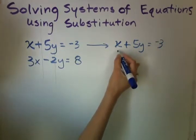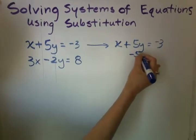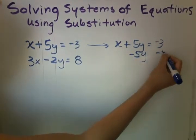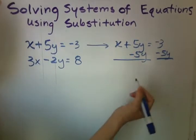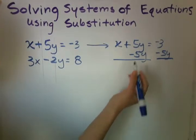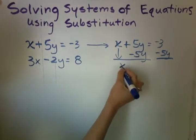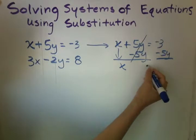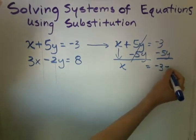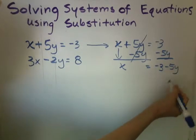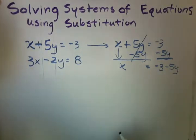So x is being added to 5y. So in order to get rid of 5y, we're going to subtract it to both sides. You can see videos on one step, two step equations. And we have here x. The 5y's cancel out. And we're left with negative 3 minus 5y. Or you can write negative 5y minus 3. Either way, it's fine.